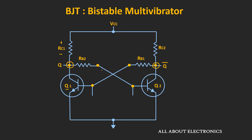As the same voltage is also applied at the base of transistor Q2, the voltage appearing at the base of Q2 will also be less. So transistor Q2 will conduct less, and its collector current IC will also be less. Because of that, the drop across resistor RC2 will be less, and more voltage will appear at the collector of Q2. As the same voltage is applied to the base of Q1, transistor Q1 will conduct more and more, and eventually it will go into saturation.